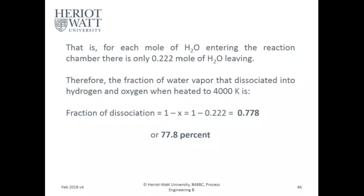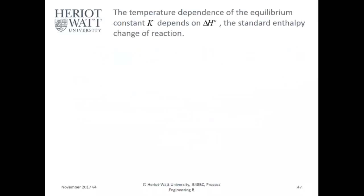The fraction of dissociation: 1 minus 0.222 equals 0.778. Hence, it's 77.8% conversion if you heat it up to 4,000 Kelvin. It's a kind of expensive way of doing it, but it's a possible way of generating hydrogen.